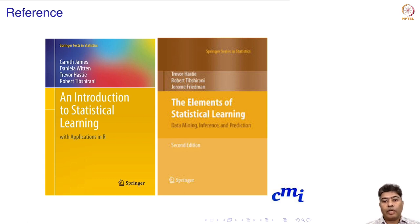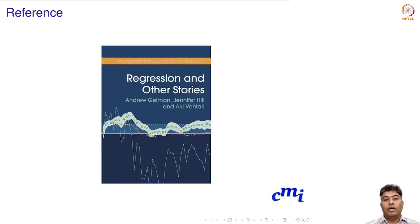Most of my materials are based on two books: James, Witten, Hastie and Tibshirani's Introduction to Statistical Learning, and Hastie, Tibshirani and Friedman's Elements of Statistical Learning. Recently, Andrew Gelman and his colleagues Jennifer Hill and Aki Vehtari have written a new book called Regression and Other Stories. Most of my material in this course will come from these three books.